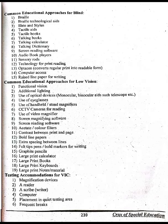Page 239. Common educational approaches for blind: number one, Braille; number two, Braille technological aids; number three, slate and stylus; number four, tactile aids; number five, tactile books; number six, talking books; number seven, talking calculator; number eight, talking dictionary; number nine, screen reading software; number ten, audio book players; number eleven, sensory roads.